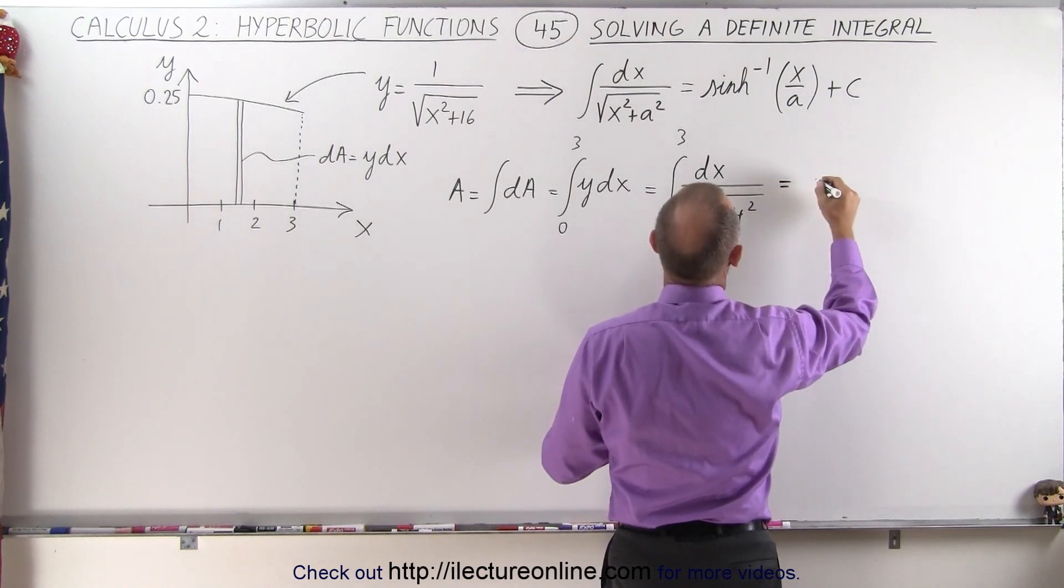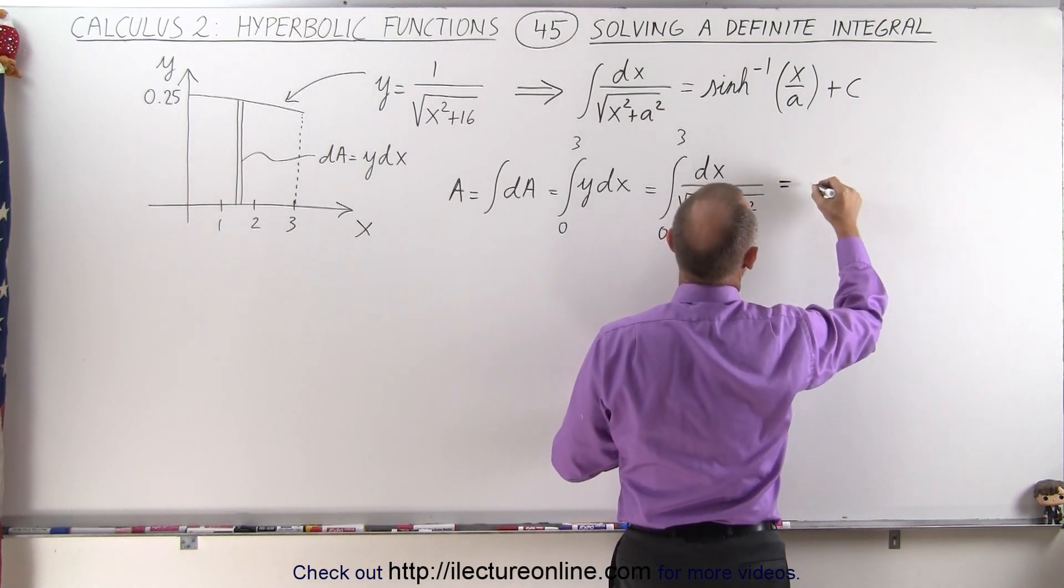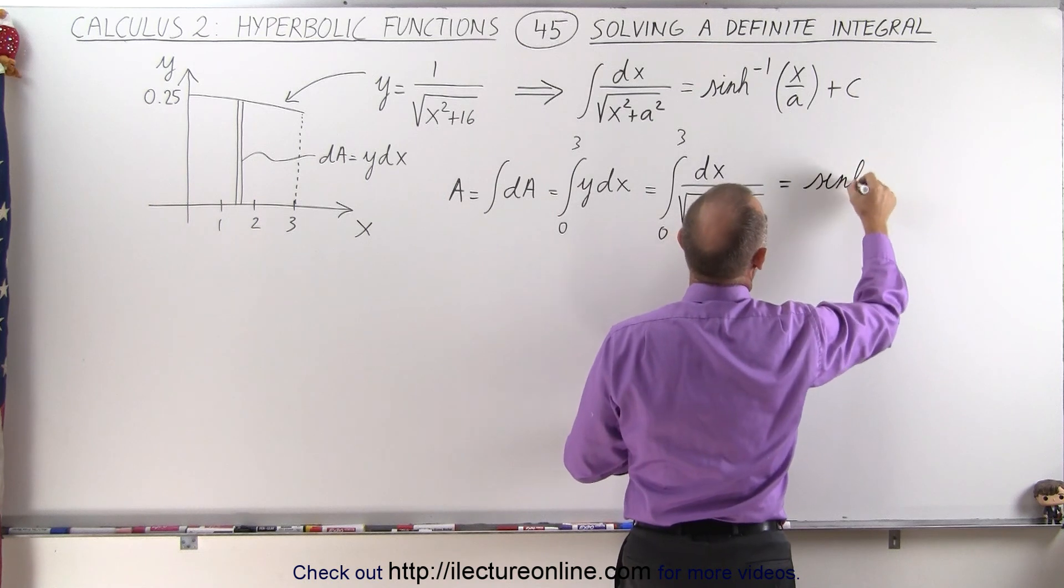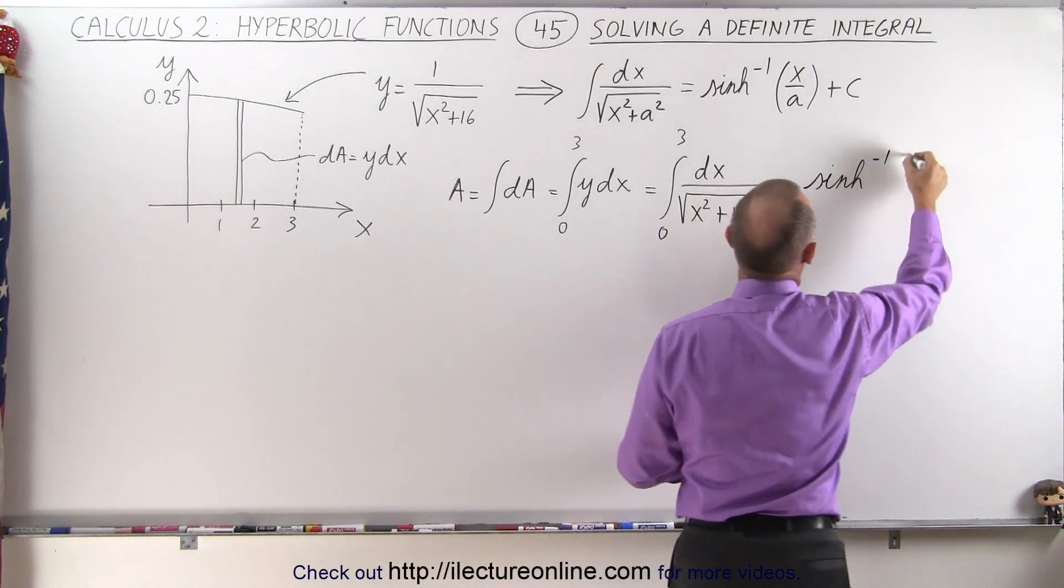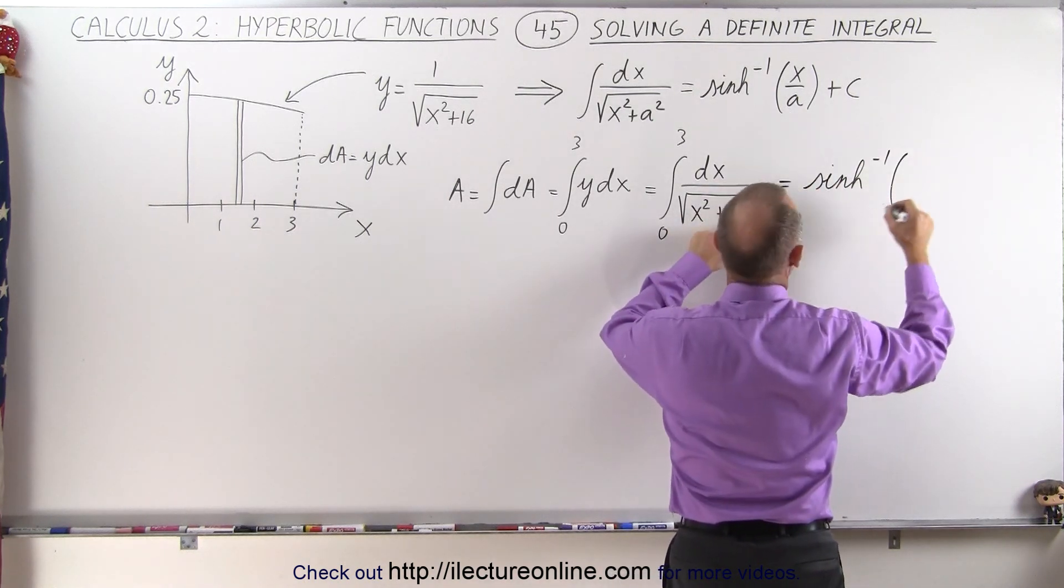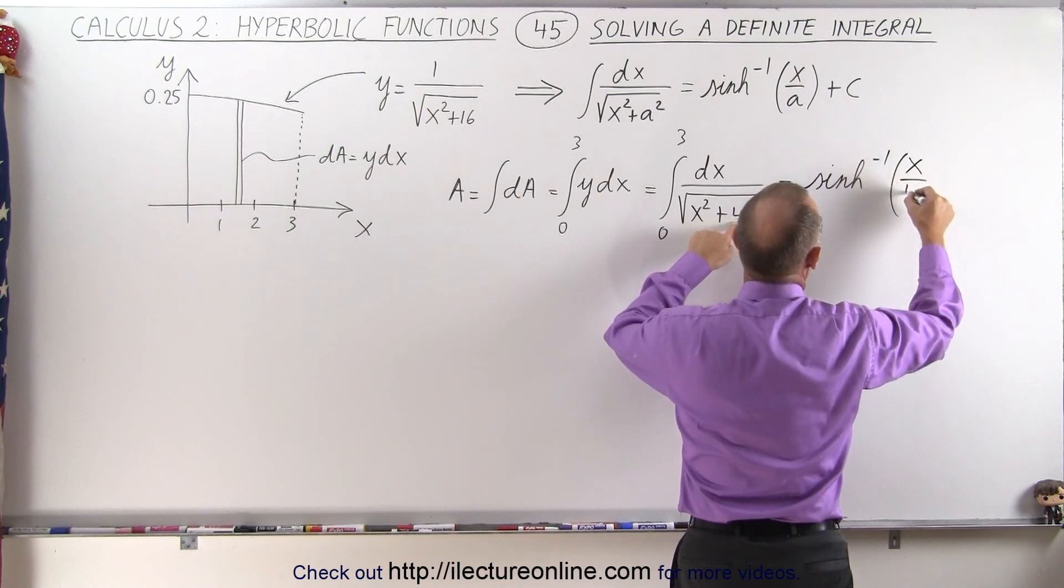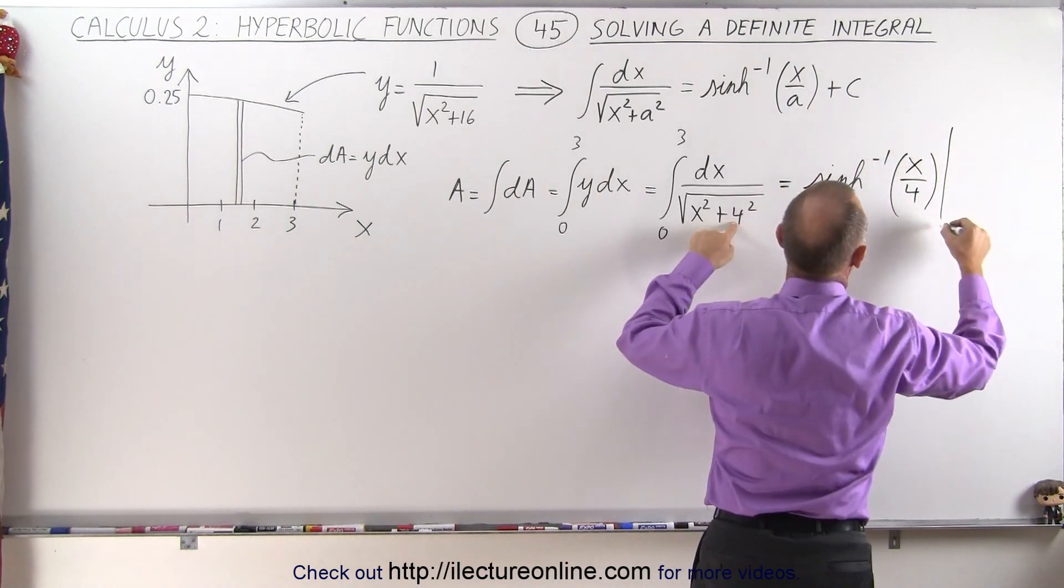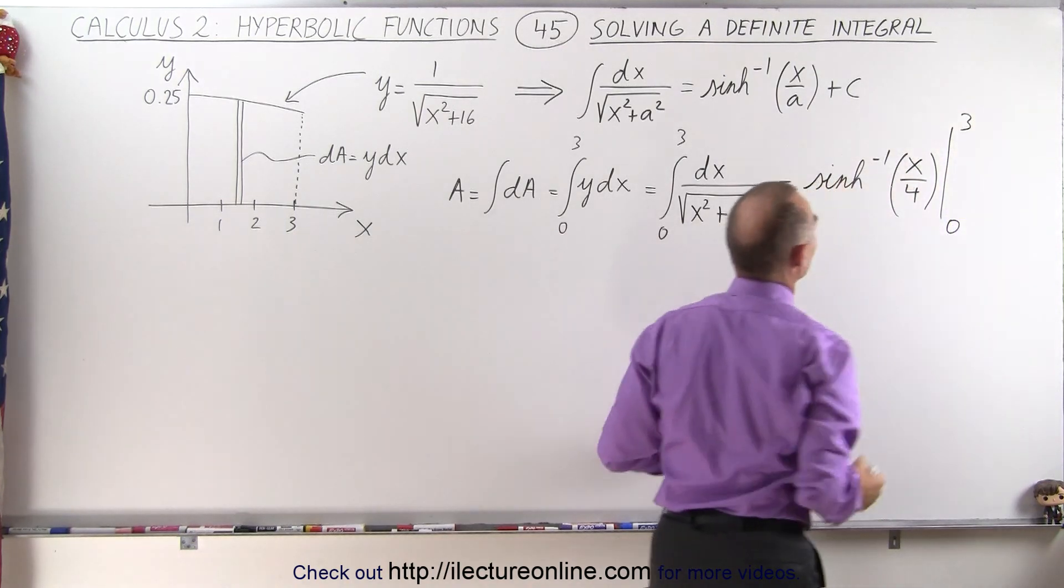So this can now be written as the result of that is the inverse hyperbolic sine of x over a, a being 4. So it would be x divided by 4, and then evaluated from 0 to 3.